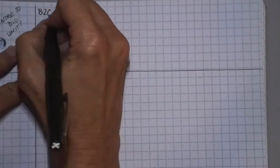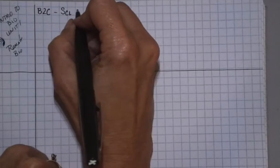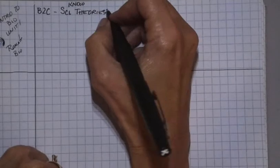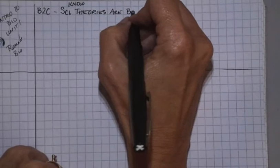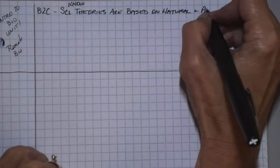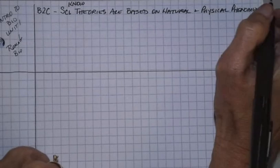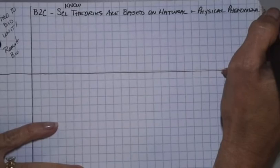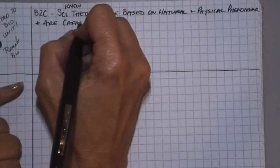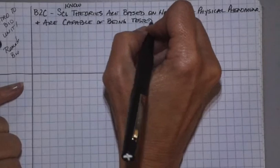The B2C and D are really long TEKS, so I'm going to modify them just a little bit so they're not quite so long. B2C says that you're going to know scientific theories are based on natural and physical phenomena. I'm going to abbreviate scientific theories. So this is, you need to know this: scientific theories are based on natural and physical phenomena, which just went off the end of the page there. And are capable of being tested by multiple independent researchers. This is a big deal.